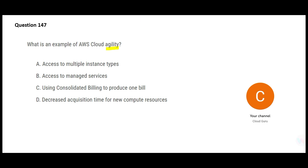An agile person takes very little time to learn and deliver things. In the AWS world, agility means taking less time to acquire new compute resources. If a website goes from 100,000 to 1 million customers, the system is agile enough to add new compute resources quickly. That is agility.